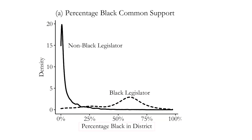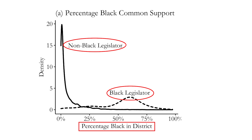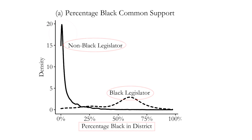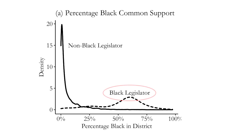He recognized there is a back door here: Black legislators are more likely to be elected in areas where there are a lot of Black people living. So the percentage of Black people in the district is a back door between whether your legislator is Black and also maybe whether you respond to the email. When we look at the distribution of percent Black in the district between Black and non-Black legislators, things are actually quite different. Among non-Black legislators, the vast majority live in areas with not many Black people, whereas Black legislators are very likely to be in districts that are 50–75% Black.